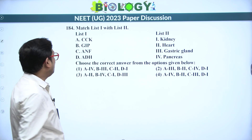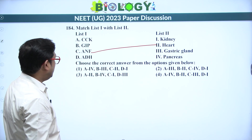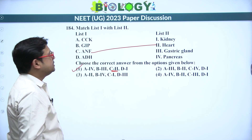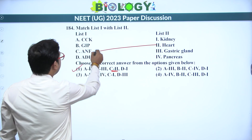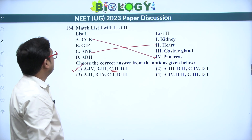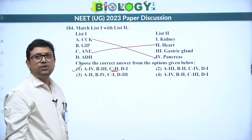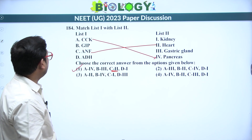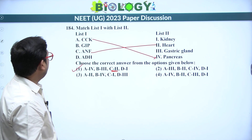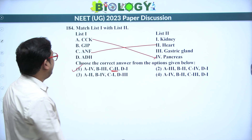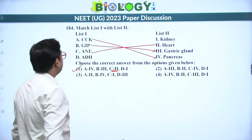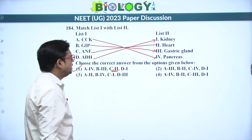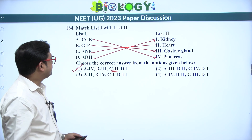Next: match the column for hormones. ANF (atrial natriuretic factor) is produced from the heart wall — C is 2. CCK (cholecystokinin, also called pancreozymin) is produced from the duodenum and acts on the pancreas. GIP (gastric inhibitory peptide) inhibits gastric glands. ADH (anti-diuretic hormone) acts on the kidney tubules and collecting duct. Answer is 1.